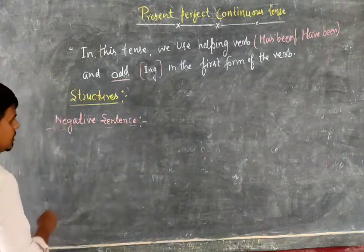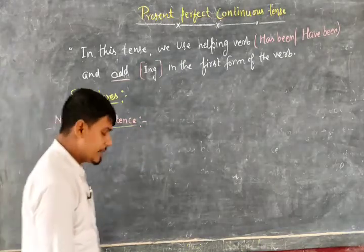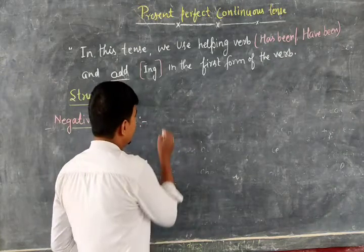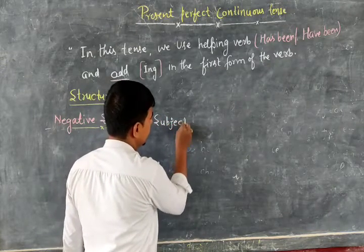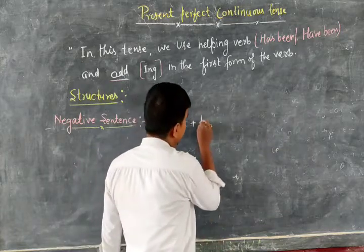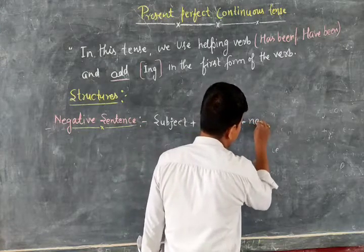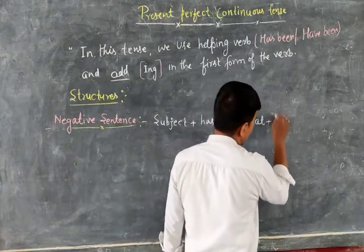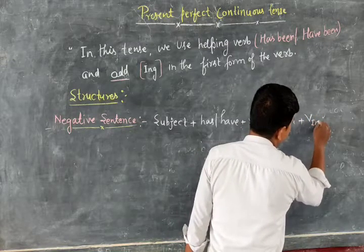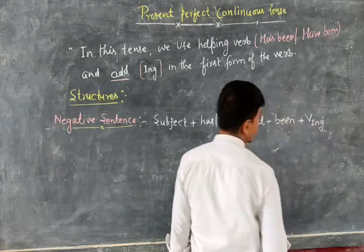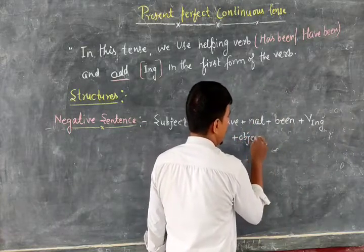In the negative sentence, as usual, we also mention the subject first. After that, the helping verb 'has been' or 'have been.' After the helping verb, we add 'not,' then the '-ing' form of the verb, then the object.